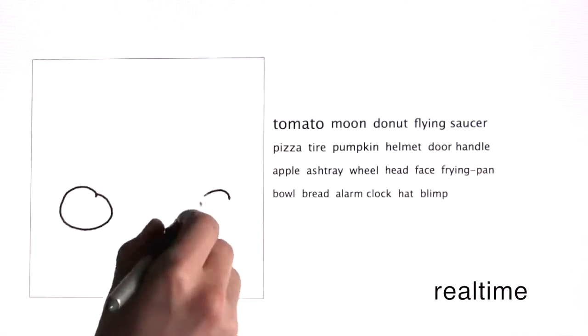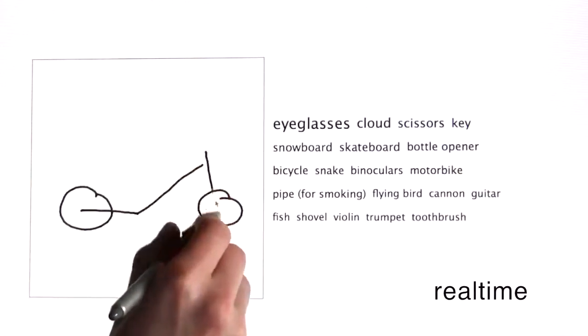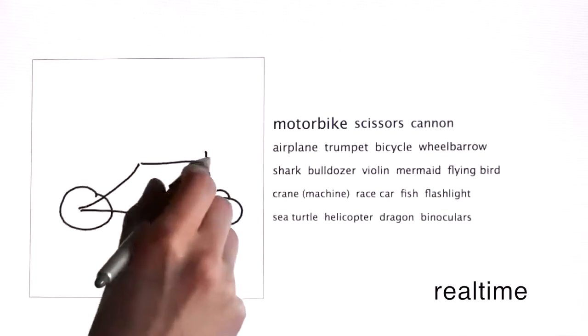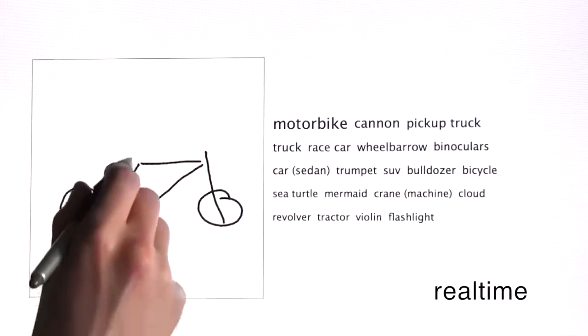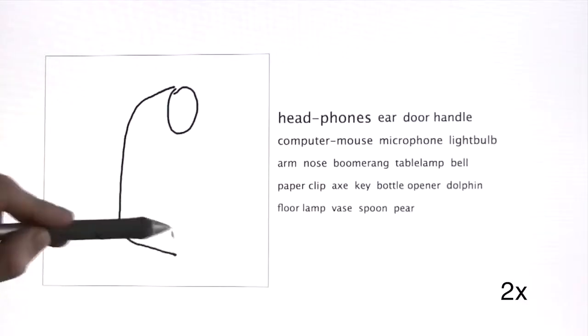In this video, we demonstrate our interactive sketch recognition engine. Users sketch an object using a touch screen device or a mouse. Our engine then reliably recognizes the correct category in real time as users add additional strokes.